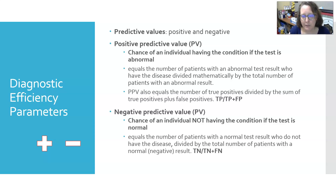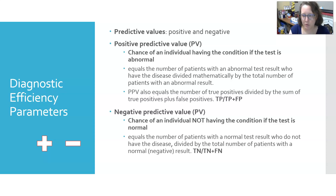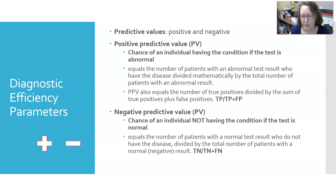The negative predictive value is the chance of an individual not having the condition if the test is normal. It equals the number of patients with a normal test result who do not have the disease divided by the total number of patients with a normal or negative result — that is, true negatives divided by true negatives plus false negatives.